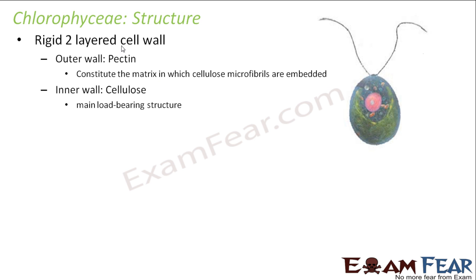Now let us look at something special about the structure of Chlorophyceae. The cell wall is an important part. In Chlorophyceae, they have a rigid two-layered cell wall — one outer wall and one inner wall. The outer wall is made up of pectin and the inner wall is made up of cellulose. Cellulose is the main load-bearing structure seen in most cell walls.